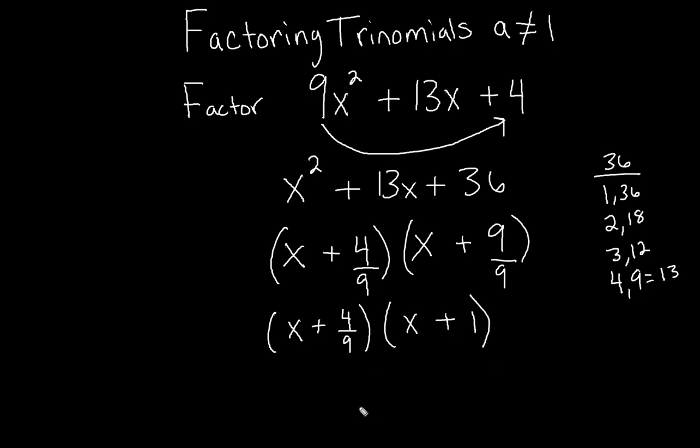So now we're down to these two binomials. But we don't like fractions in here when we factor it. So what we do is take any denominators we have left over and we're going to multiply them back out in front of the x. So our new factor is going to be 9x plus 4 times x plus 1.